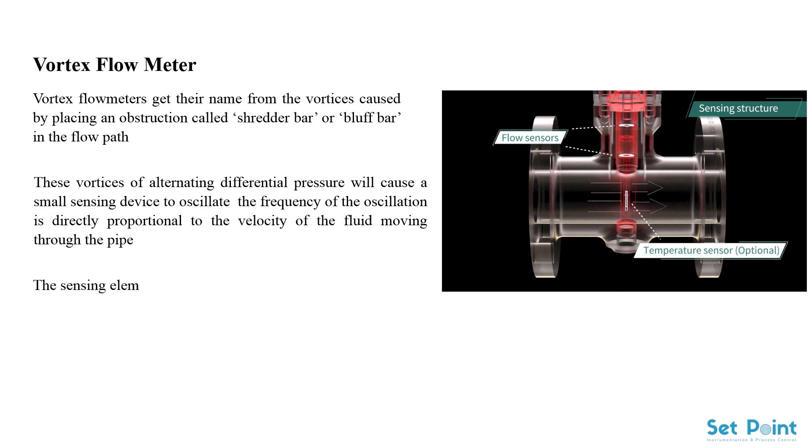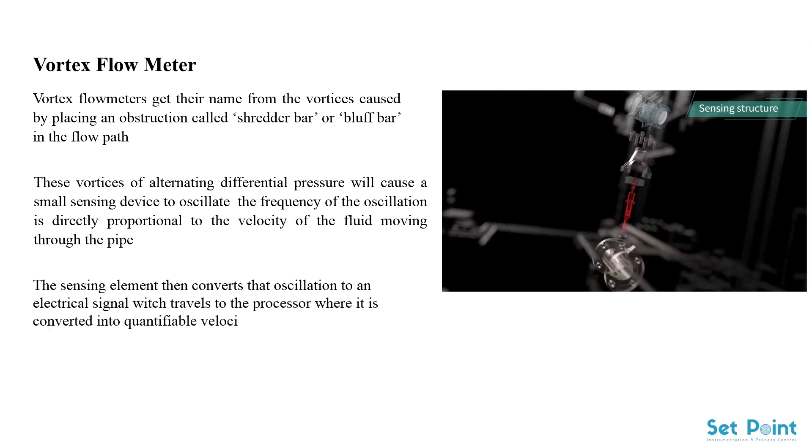The sensing element then converts that oscillation to an electrical signal which travels to the processor where it is converted into a quantifiable velocity reading.